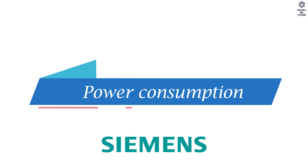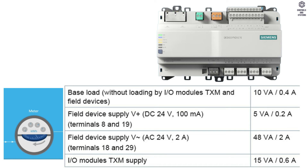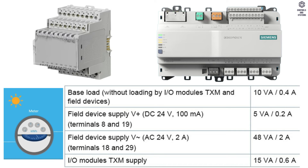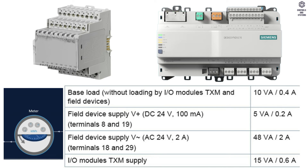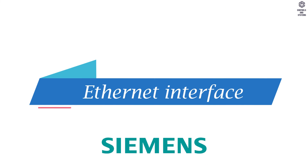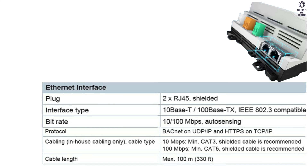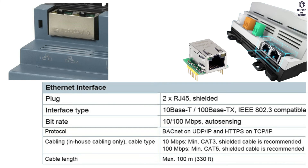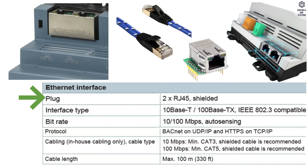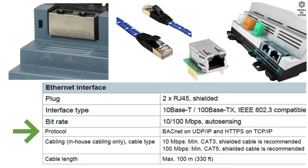Power Consumption: this table indicates the details of power consumption for different loads and different terminals. Ethernet Interface: this table indicates details of plug ports, interface type, bit rate, protocol, cabling and cable length.